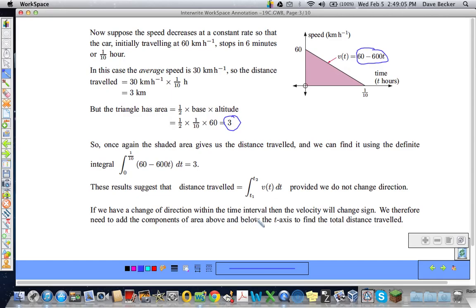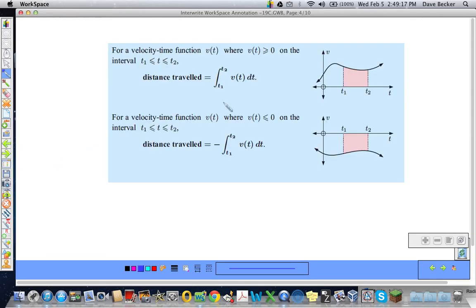Of course, if we change direction within the time interval, then the velocity will change the sign, and we have to add the components of the area above and below the t-axis, the time axis, to find the total distance traveled. And that's, we have talked about that already. We're talking about area. We need to negate it to get the distance traveled. Distance can't be negative.